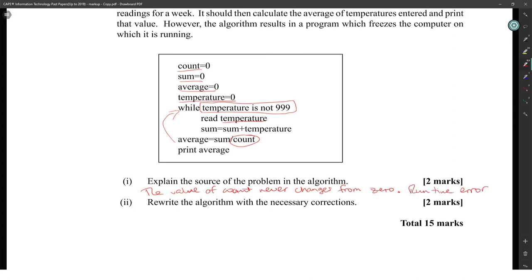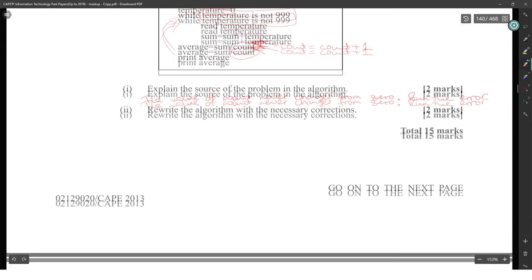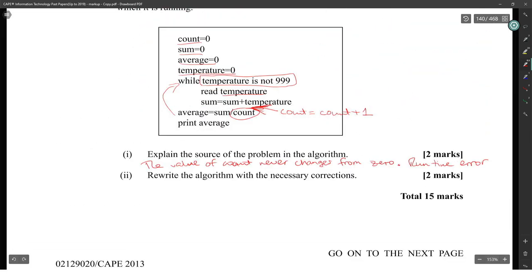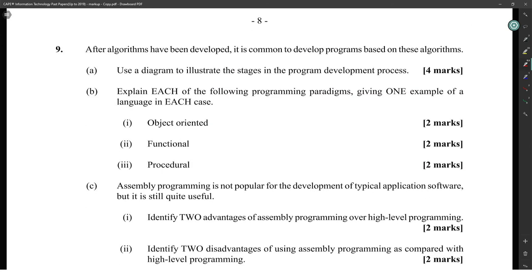Part two: Rewrite the algorithm with the necessary corrections. Basically, you have to put count inside the while loop, right before the end. You have to put count equals count plus 1. That's all. Algorithm fixed, because now you're putting a counter in place so that when you do this division, you'll actually have a number. The while loop is this block, so you want to include that counter in the loop.